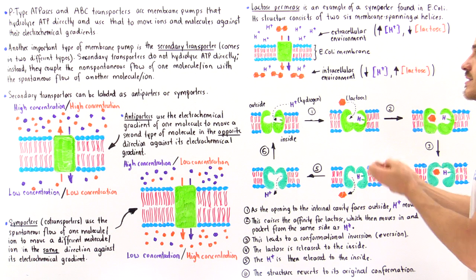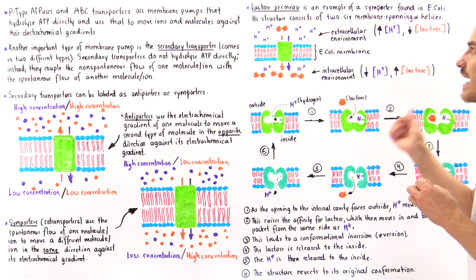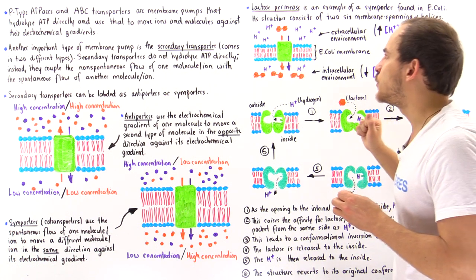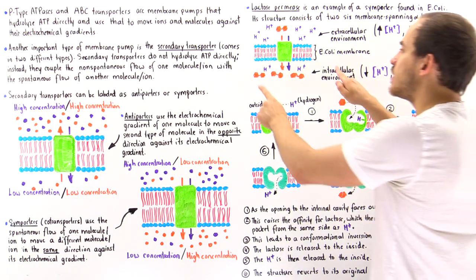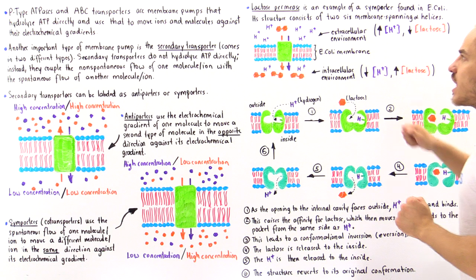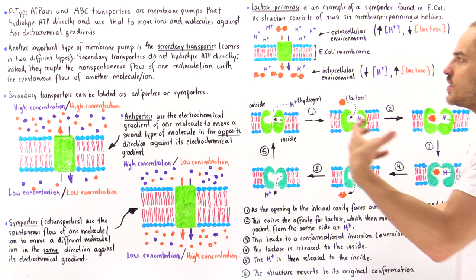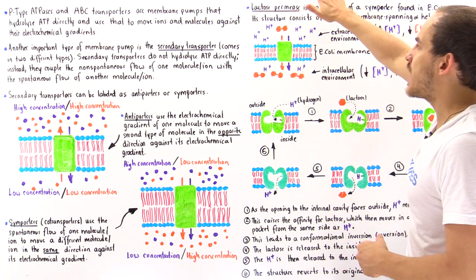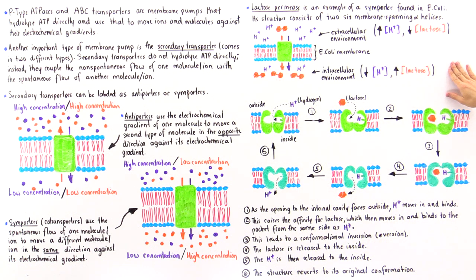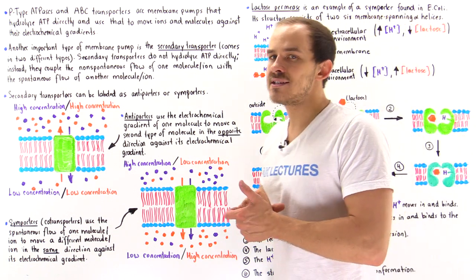That free energy is taken in and used to transfer sugar molecules — in this case, lactose molecules. Since there is a higher concentration of lactose on the inside than on the outside, we move them against their electrochemical gradient, from the outside to the inside. This is the general idea of what lactose permease does.